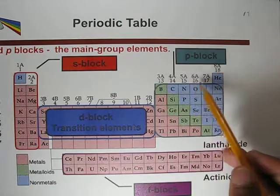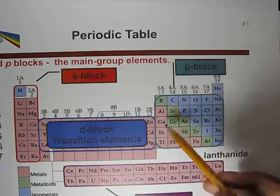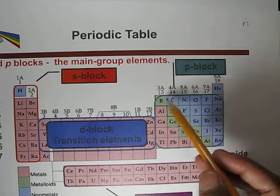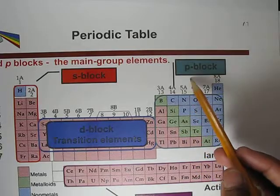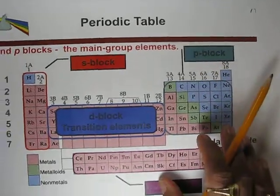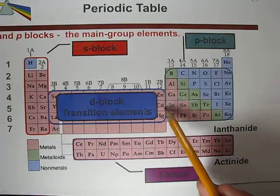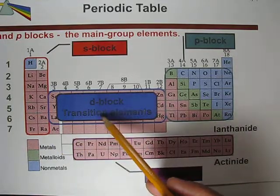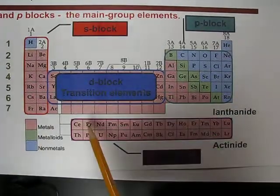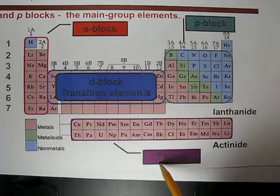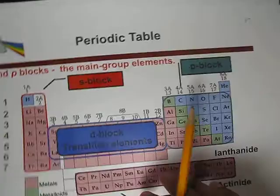All the nonmetals starting from group 3A to 8A from top to bottom, including some metalloids and metals, are called p-block elements. All the transition elements in between the metals and nonmetals are called d-block elements. The lanthanides and actinides, which form two separate series, are called f-block elements.